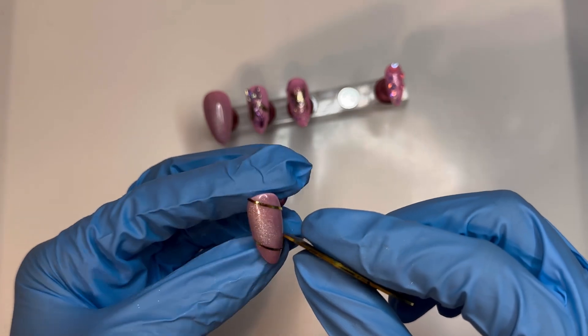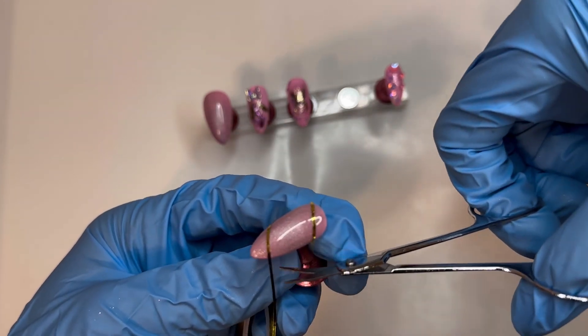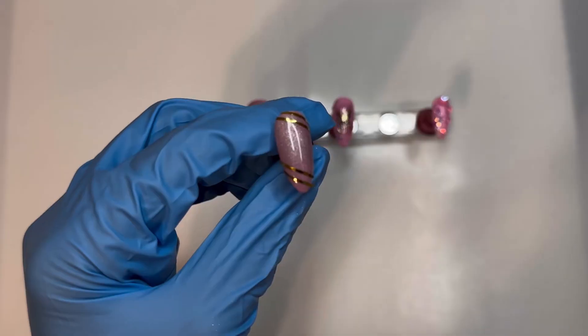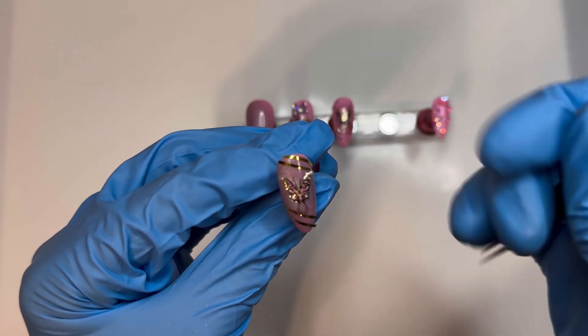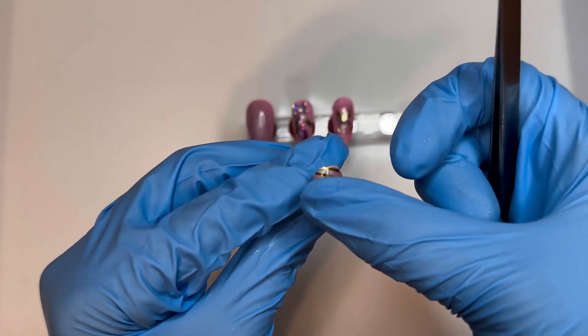I felt like this design needed even more gold, so I found these gold tape pieces and I'm just diagonally placing them onto the nail. I'm also taking another one of these butterfly stickers and putting that right in the center.